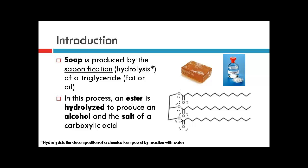We begin with an introduction of important things to know prior to this experiment. Soap is typically produced by saponification of a triglyceride, which is basic fat or oil. Saponification involves the hydrolysis of an ester to form an alcohol with the salt of a carboxylic acid. Hydrolysis is the decomposition of a chemical compound by reacting it with water.